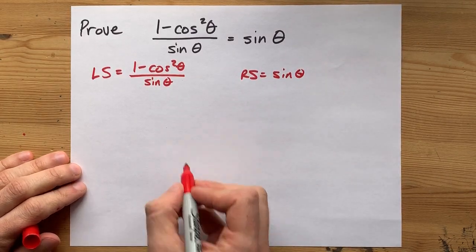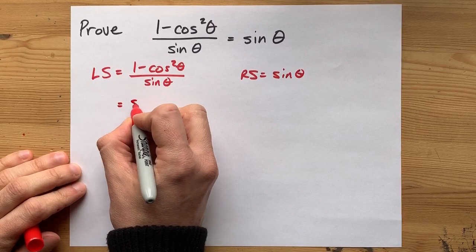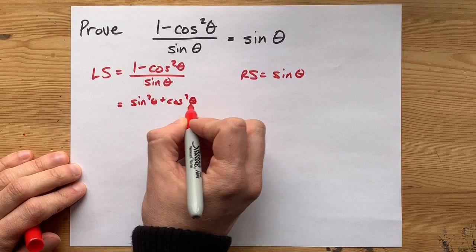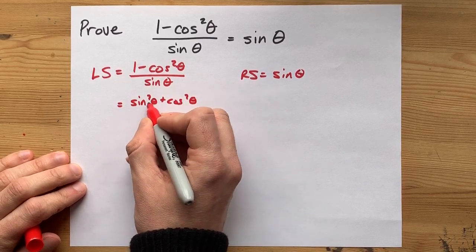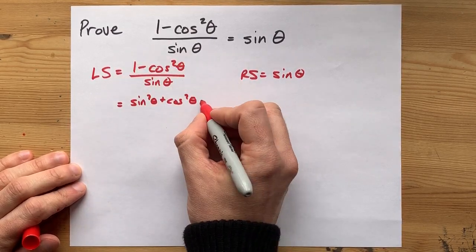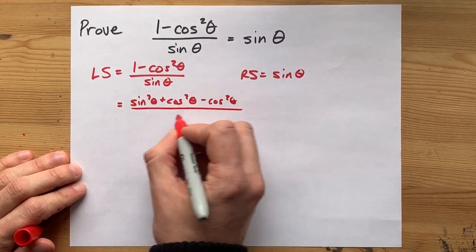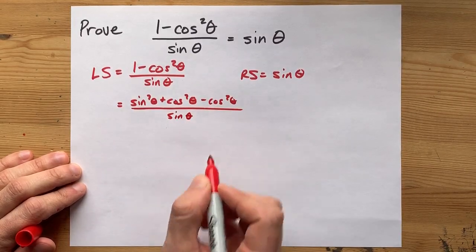it will be true. You can replace 1 with sine squared plus cos squared anytime you want to, because sine squared plus cos squared equaling 1 is the Pythagorean identity. That whole thing is still over sine theta.